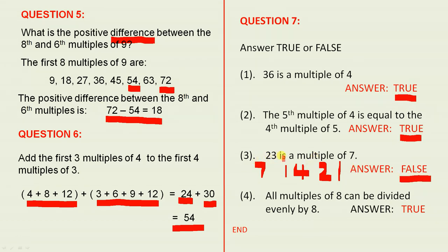Because here it says 23 is a multiple of 7—that's false. And the last one: All multiples of 8 can be divided evenly by 8. That has to be true. Of course that's exactly the meaning of multiples. All multiples of 8 can be divided evenly by 8. That's why the answer is true.